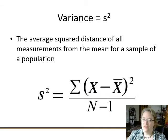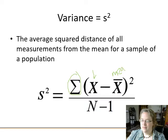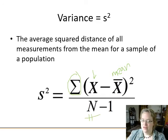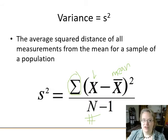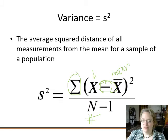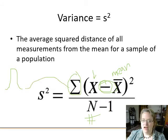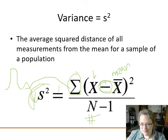Next we have variance, s-squared — the average squared distance of all measurements from the mean for a sample of a population. Using sum notation: take each x, subtract the mean, square that, sum them all up, then divide by n minus one (the number of observations minus one). This is similar to our chi-square test where we had observed minus expected squared over expected. Variance tells us whether the population is very tight with small variance or very wide with large variance.